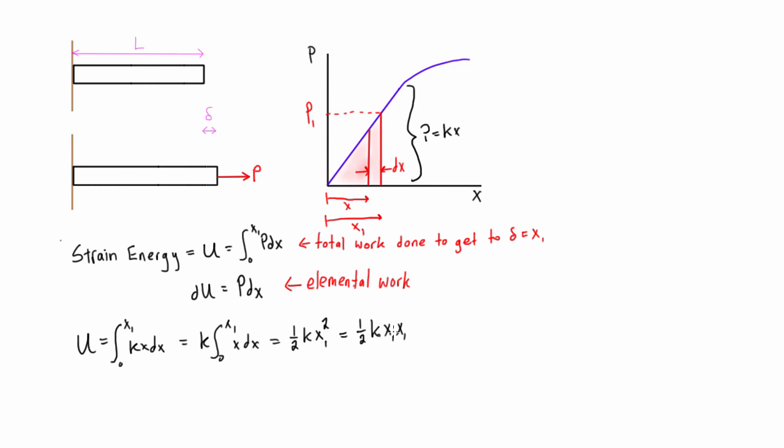So if Kx is equal to P then we can rewrite this as 1 half P1 x1. So this is our expression for strain energy where we have strain energy is equal to U is equal to 1 half P1 x1.